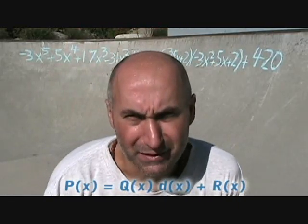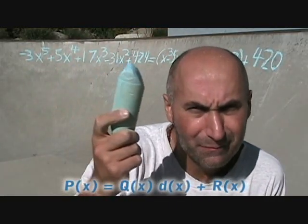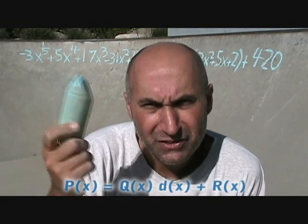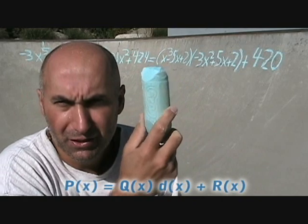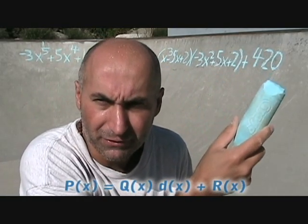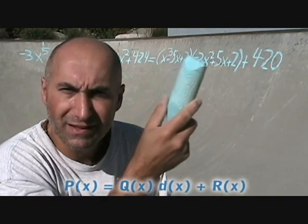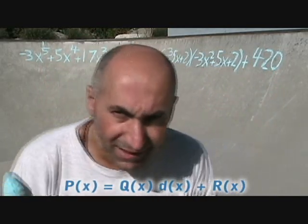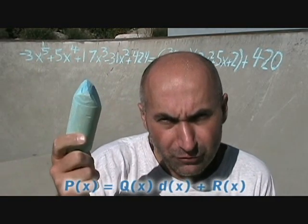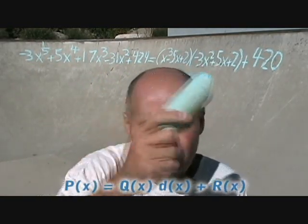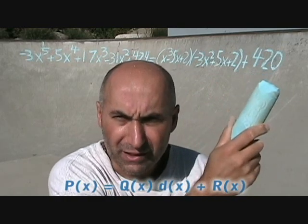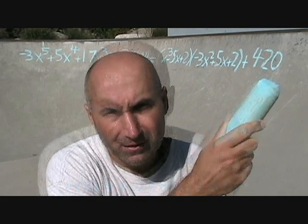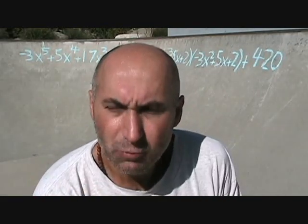The division statement is: P(x) equals the quotient times the divisor plus the remainder — P(x) = Q(x) · D(x) + R(x). This means this polynomial equals this polynomial times this polynomial plus 420. This function equals this function times this function plus this function. Graphically, this is what it looks like.